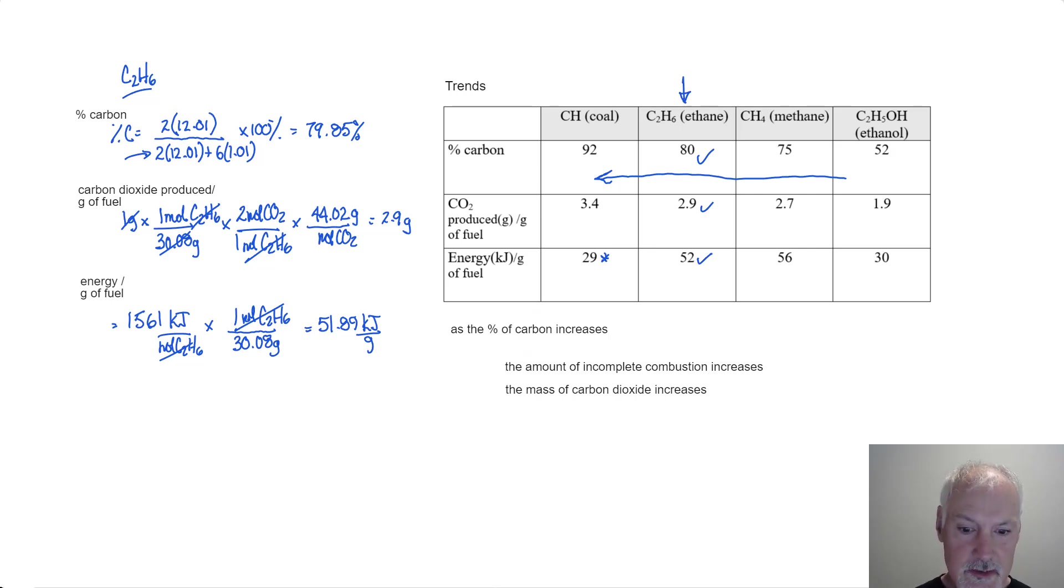Lastly, I want to focus at a trend that only occurs within my hydrocarbons. So I'm just going to consider this range of chemicals. So looking at my hydrocarbons and the energy. As I increase the carbon content, the energy content decreases. So the energy per gram is referred to as the specific energy. So we can see here as we move from methane to ethane to coal, I'm actually getting less energy per gram of fuel burned. So that summarizes some of the trends you should be able to pick out in a table. Thanks for watching.